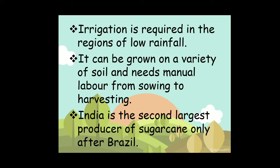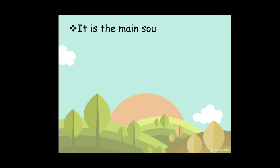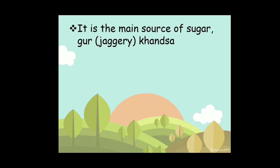India is the second largest producer of sugarcane, only after Brazil. It is the main source of sugar, gourd, jaggery, khandsari, and molasses.